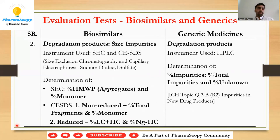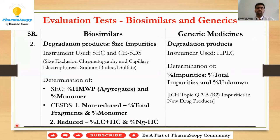In CE-SDS, there are two techniques: non-reduced and reduced. Non-reduced is majorly used for checking percent purity — we analyze total fragments as well as percent monomer. In reduced CE-SDS, we focus on percent LC plus HC (light chain plus heavy chain) and percent NHC (non-glycosylated heavy chain). These four are the key parameters checked across reduced and non-reduced CE-SDS.